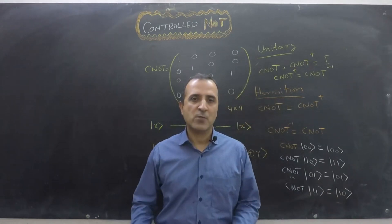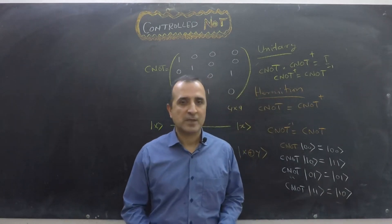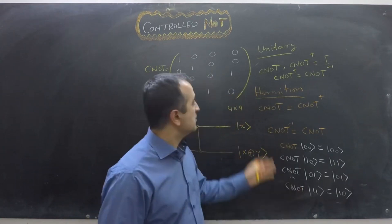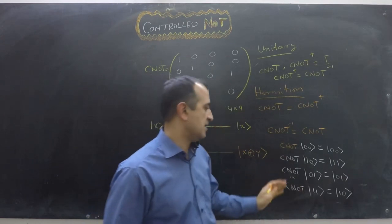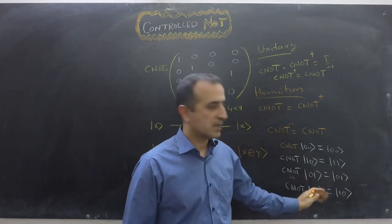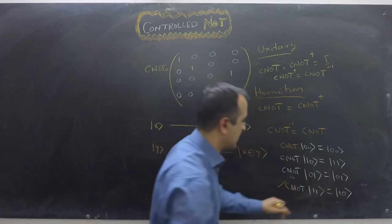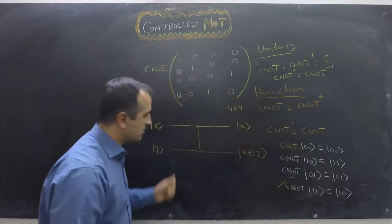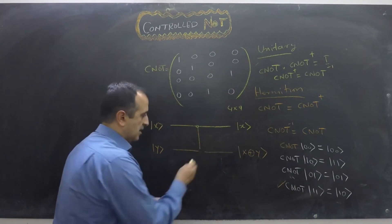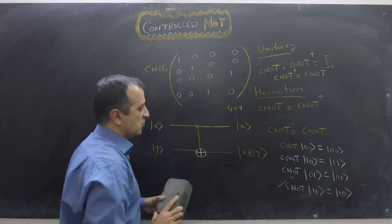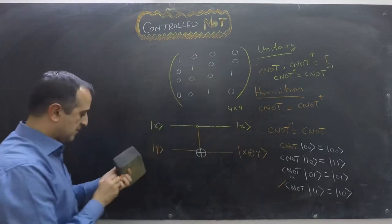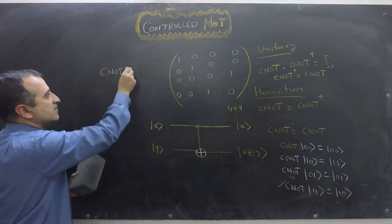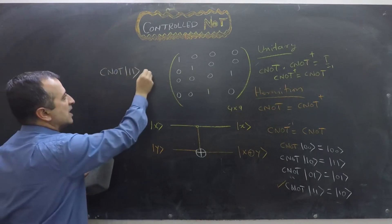Because the aim is for everyone to understand quantum computing, we should verify one of these results using the matrix rather than just believing them. Let's verify the case of applying CNOT to |11⟩ and confirming the result is |10⟩.